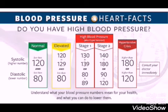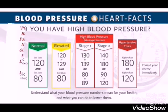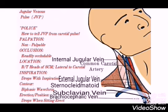Your body produces a surge of hormones when you're in a stressful situation. These hormones temporarily increase your blood pressure by causing your heart to beat faster and your blood vessels to narrow. But reacting to stress in unhealthy ways can increase your risk of high blood pressure, heart attacks, and strokes.